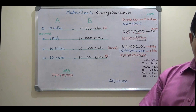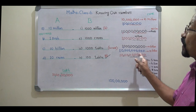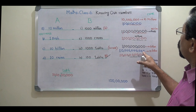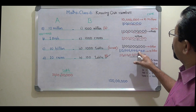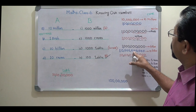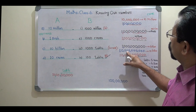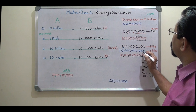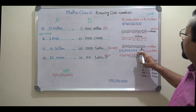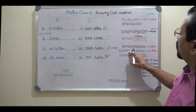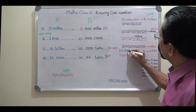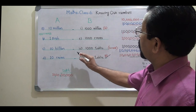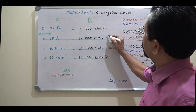Which one is correct? Crore has 7 zeros. Counting up from crore: 1, 10, 100, 1000 — that gives 1000 crores, which has 10 zeros total. So 10 billion equals 1000 crores. That is answer C.